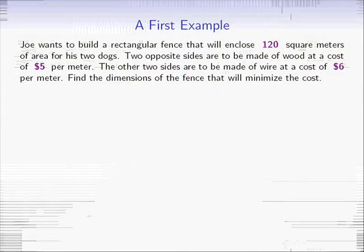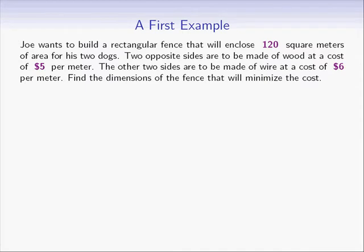Let's begin by looking at the following question. Joe wants to build a rectangular fence that will enclose 120 square meters of area for his two dogs. Two opposite sides are to be made of wood at a cost of $5 per meter. The other two sides are to be made of wire at a cost of $6 per meter. Find the dimensions of the fence that will minimize the cost.